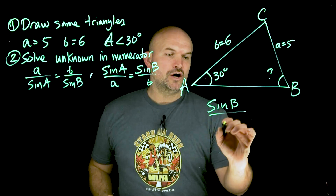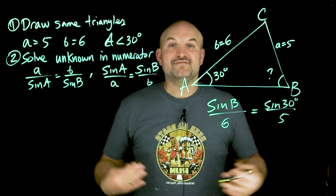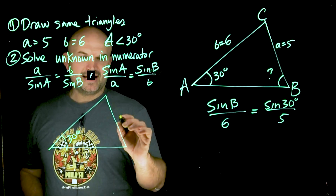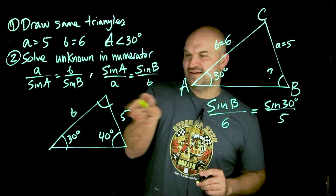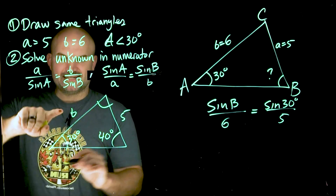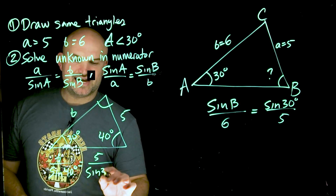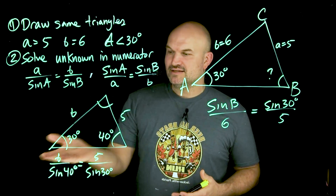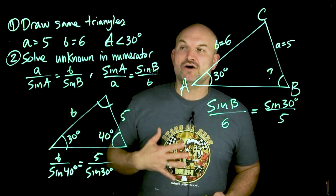So I'd write it as sine of B over six is equal to sine of 30 degrees over five. I can multiply six on both sides, take the sine inverse, and find the value of B. For a different case — say we have 30 degrees, a side of five, an angle of 40 degrees, and a missing side — I would use the other relationship: b over sine of 40 degrees equals five over sine of 30 degrees. Always have whatever missing value you're looking for in the numerator: if it's a side length, put it in the numerator; if it's an angle, put it in the numerator.